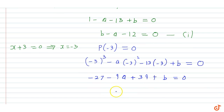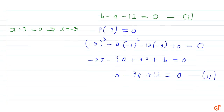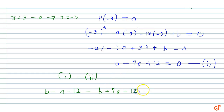So the equation becomes: b minus 9a, and 39 minus 27 is 12, equal to 0. This gives us Equation 2: b minus 9a plus 12 = 0. Now to find a and b, we subtract Equation 2 from Equation 1: (b minus a minus 12) minus (b minus 9a plus 12) equals 0, giving us minus b cancels, plus 9a minus a, minus 12 minus 12 equals 0.